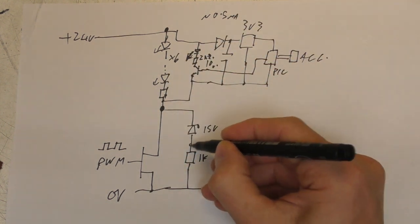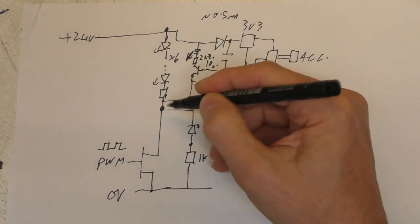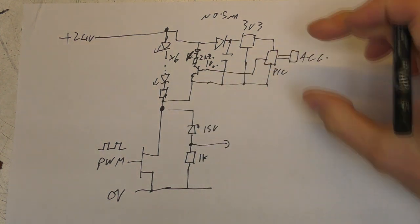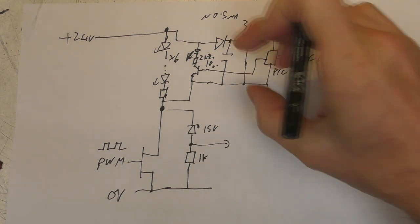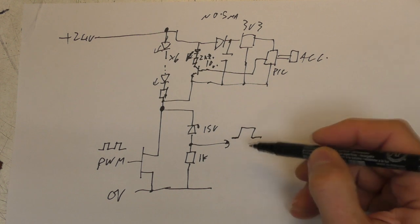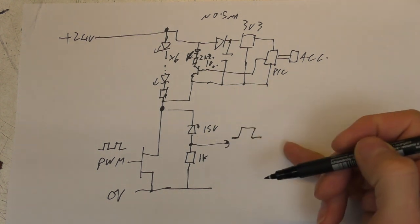So when the LEDs are off we get current flow down this path here which means we get a voltage across this resistor. What happens is that when this sensor decides to turn the transistor on we get a high voltage of maybe a couple of volts at this point so we can actually use that for our sensing.